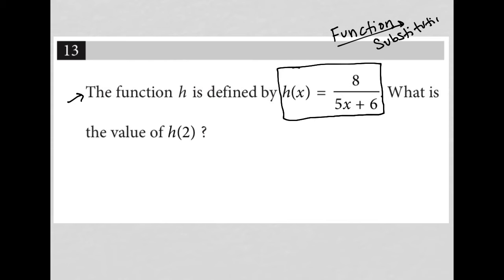Because really, if we understand that h of x equals 8 over 5x plus 6, and the question is asking for h of 2, then what has changed? We've replaced this x with a 2.